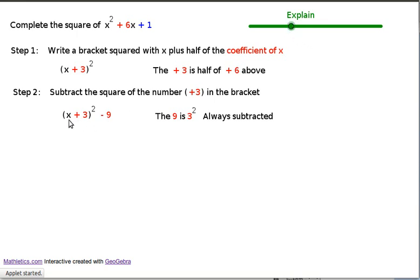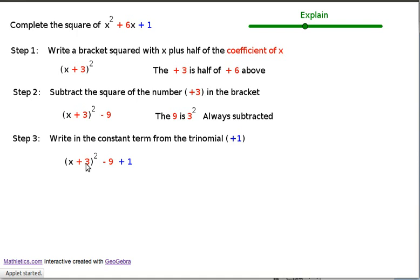And so if you expanded all that out, you'd be left with just x squared plus 6x plus 9 minus 9, and that's almost the same as what's written up there. So the next step is we just write the constant term from the trinomial. So we've got x plus 3 all squared minus 9 plus 1. And then you simplify. You can add that 1 to this minus 9 and get x plus 3 all squared minus 8.